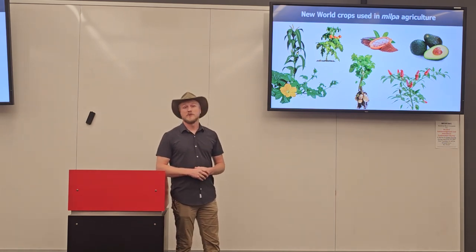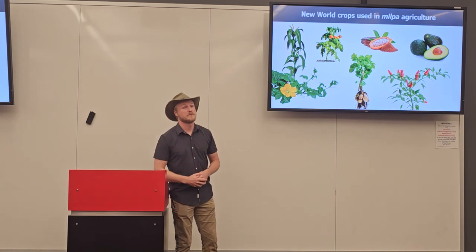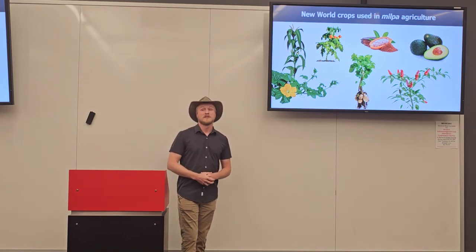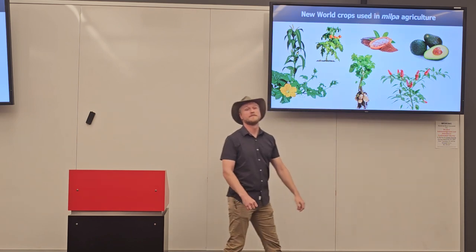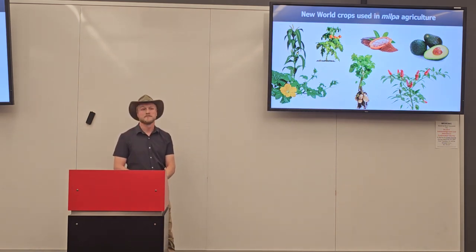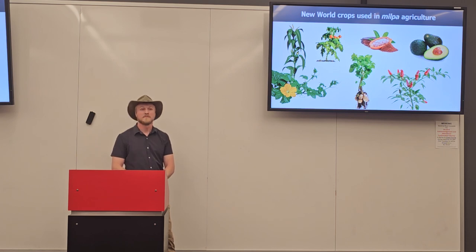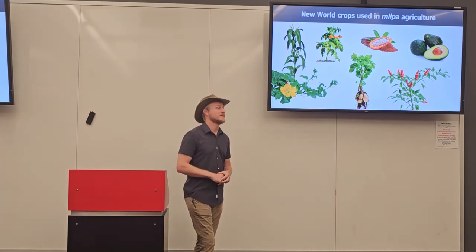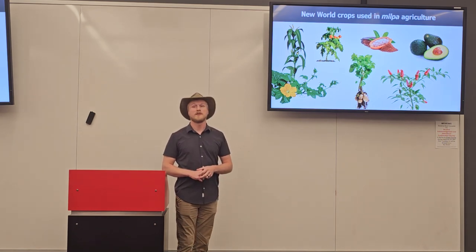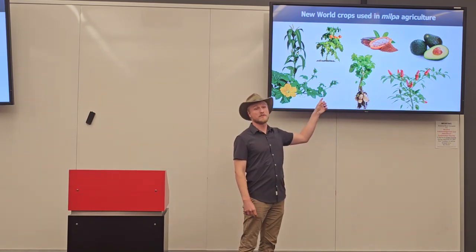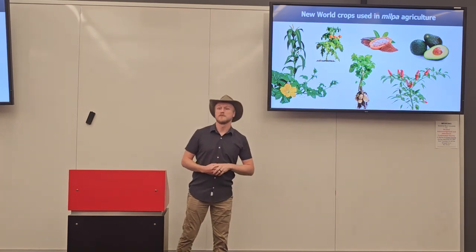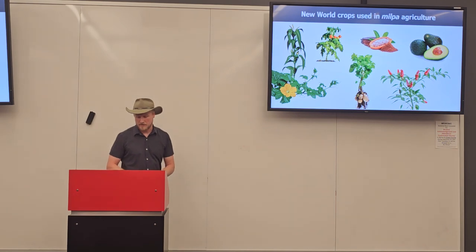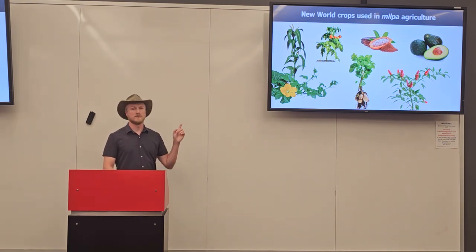Along with corn, they also grew beans, squash, tomatoes, potatoes, peppers, avocados, and cacao — that's where we get chocolate from. Fun fact: chocolate is actually a modification of the Aztec word 'chocoatl,' which came from a drink made using fermented cacao mixed with Mexican tarragon, a type of marigold.